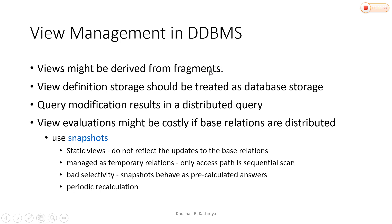In a distributed system, a view might be derived from the fragments. In a centralized system, we fetch or extract information from a single actual table, but in a distributed environment we have multiple tables — meaning multiple fragments. So a view is derived from the fragment tables, which is called a view derived from fragments.